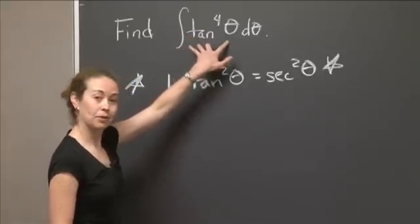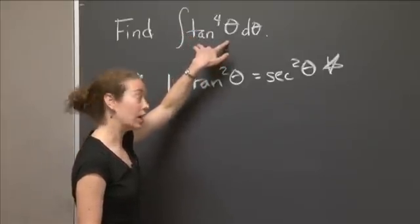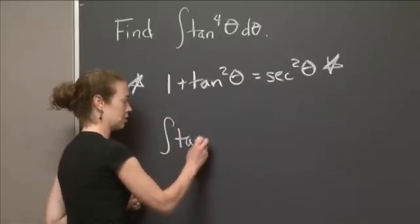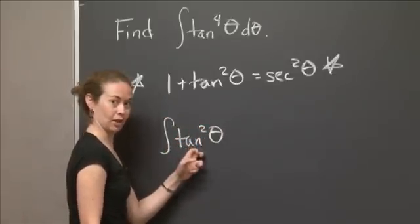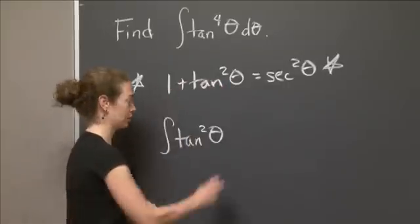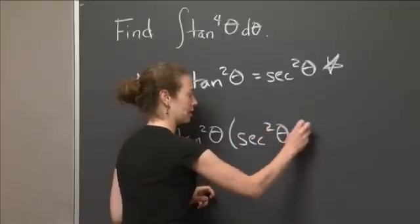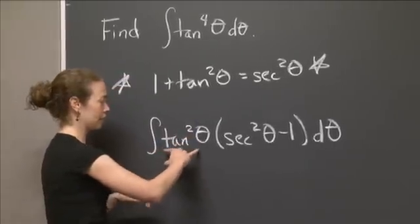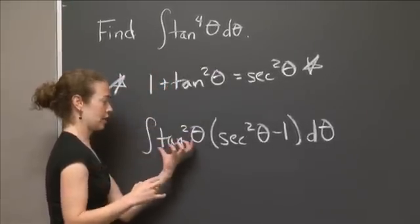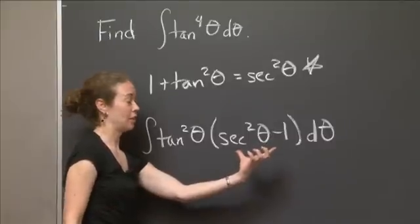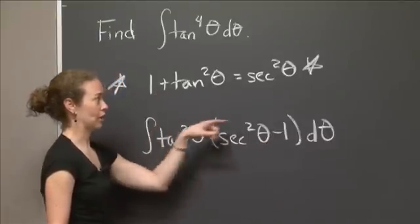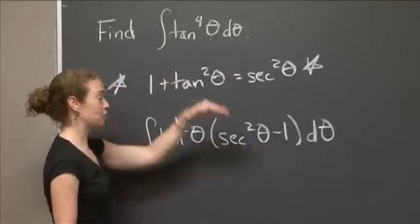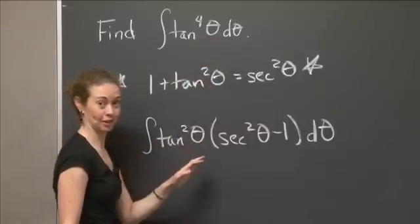So let me show you how this identity will be very useful here. And the idea is that we can break up this tangent to the fourth theta into the product of two tangent squared thetas. So I can rewrite this integral as the integral of tangent squared theta times another tangent squared theta. But instead of that, I'm going to use this identity. So I'm going to write it as secant squared theta minus 1 d theta. I just subtracted 1 from both sides of this starred identity. So these two integrals are actually equal. I haven't changed anything fundamentally at all in the problem.